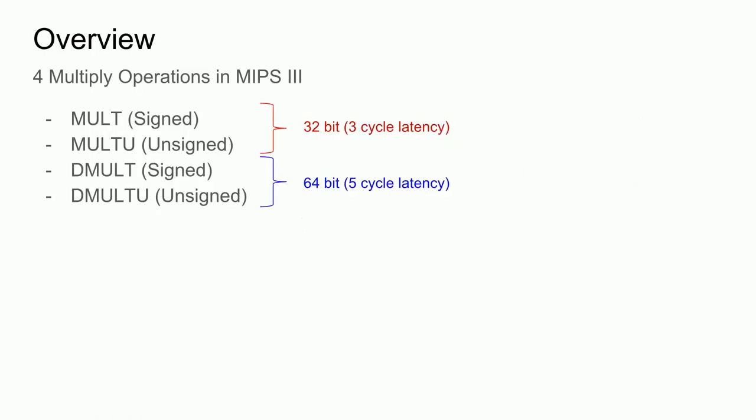The MIPS3 instruction set defines four multiply operations, which are signed and unsigned versions of 32-bit and 64-bit multiplies. One of the VR4300 manuals lists the operation latency of the 32 and 64-bit multiplies as three and five cycles, respectively. This is expected since a 64-bit multiplier requires more hardware due to twice the number of input bits, and therefore will have longer propagation delays.